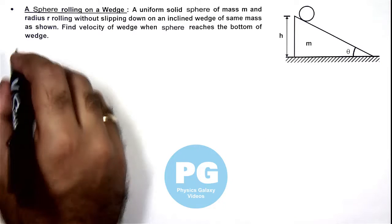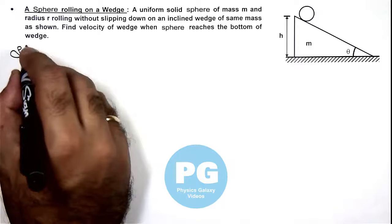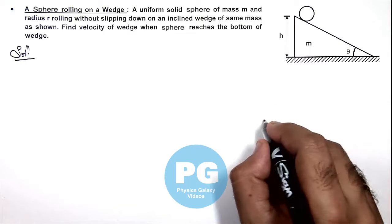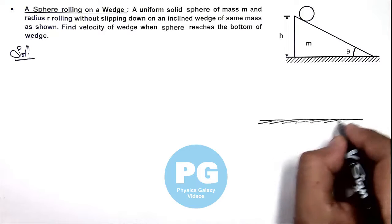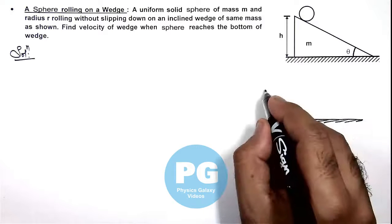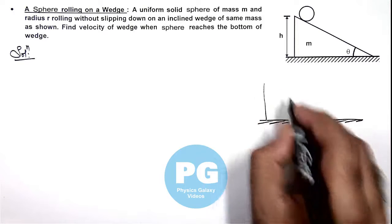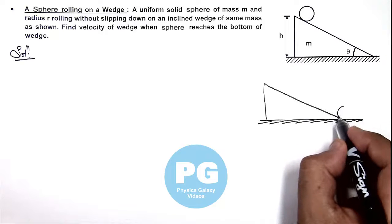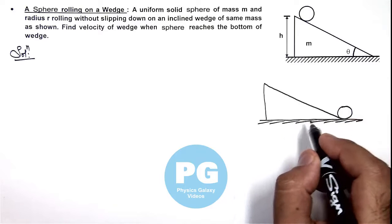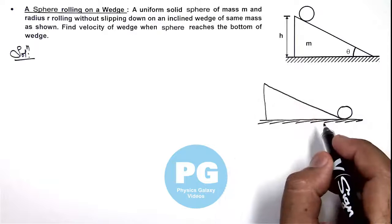Now in this situation we can analyze the case when the sphere reaches the bottom of wedge. Then wedge will attain a leftward velocity because in this situation no external force is acting on this system in horizontal direction. So its system center of mass must be at rest.